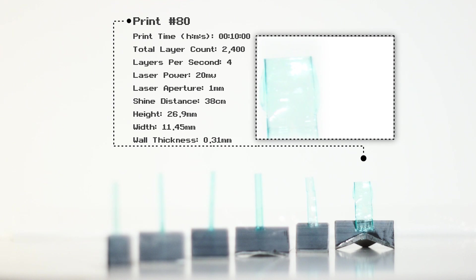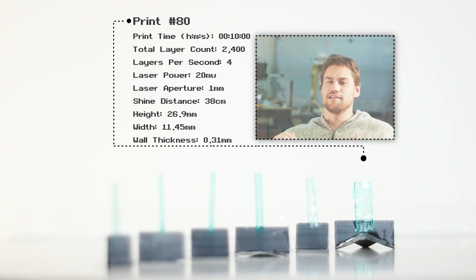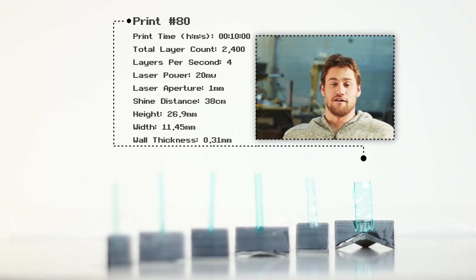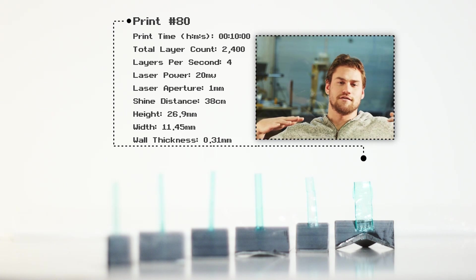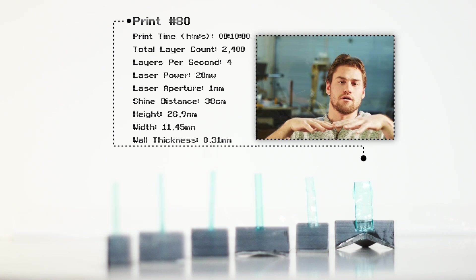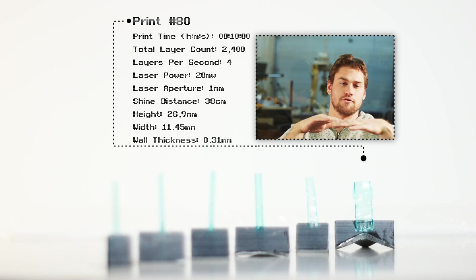In print 80 I actually accidentally ran out of resin. So I didn't mean to at all. I wasn't trying to test the printer to find out what happens when you run out of resin. But I found out anyways. And basically what happened was on the surface of the water there was places that had resin and then there was sort of open puddles of water in the area that we were doing the print.